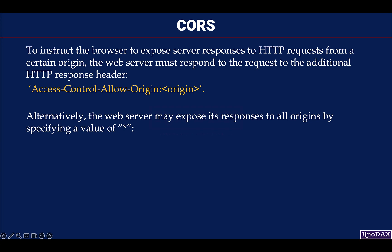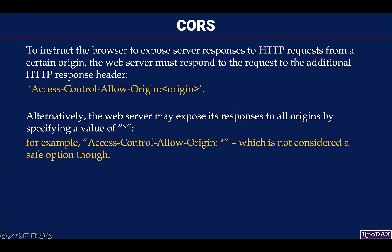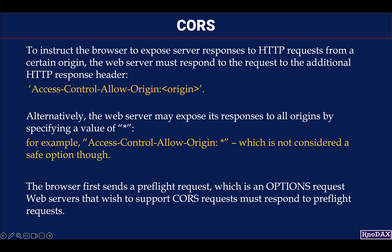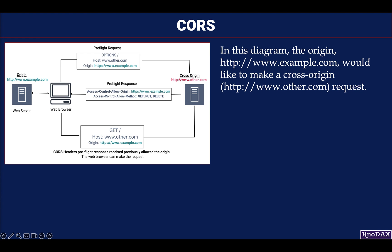Alternatively, the web server may expose its responses to all origins by specifying a value of asterisk — for example, Access-Control-Allow-Origin: * — though this is not considered a safe option. The browser first sends a preflight request, which is an OPTIONS request. Web servers that wish to support CORS requests must respond to preflight requests.